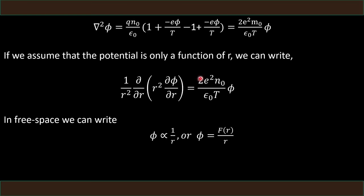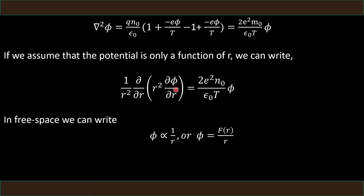Since the potential is a function of R only, we write the Laplacian in spherical coordinates: (1/R²)(d/dR)(R² dφ/dR) = (2e²N0 / ε0T) · φ. We also know that in free space the potential is inversely proportional to R, so we write φ = F(R)/R, where F(R) is a proportionality function of R. We then substitute this form of φ into the equation.